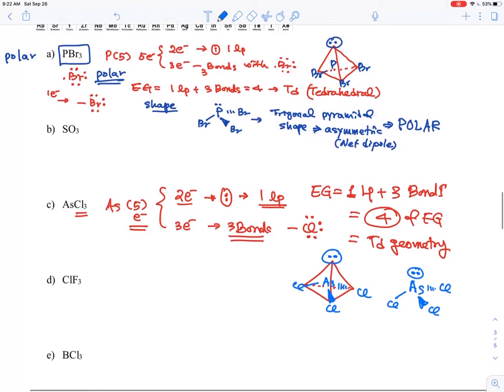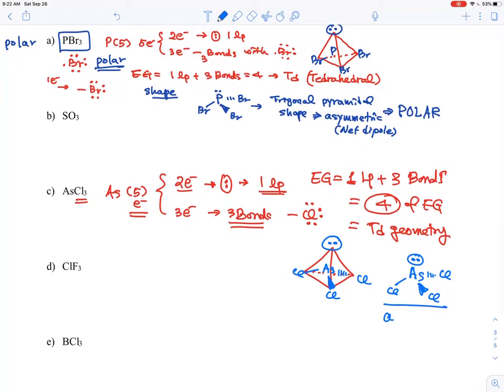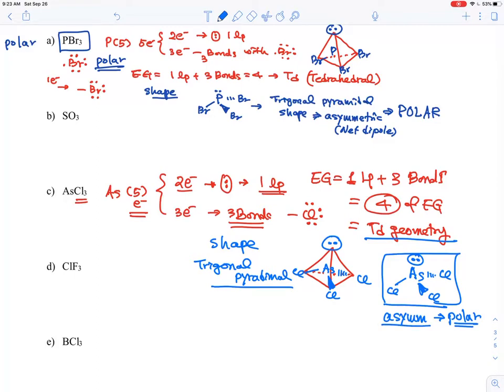With double bonds here, this structure is asymmetric, meaning it breaks the symmetry, so it becomes polar. The shape itself for tetrahedral geometry is called trigonal pyramidal, and since the structure is asymmetric, it should be polar.